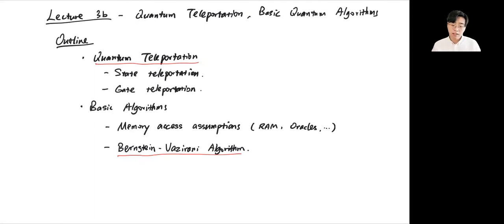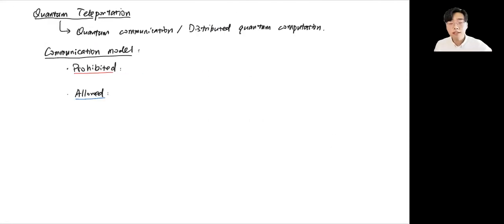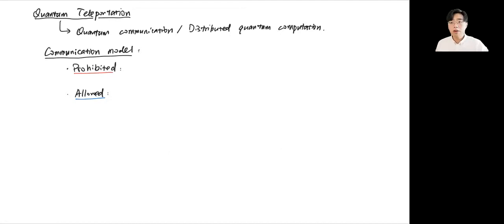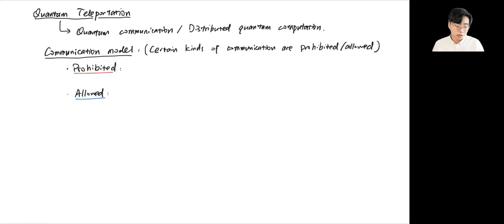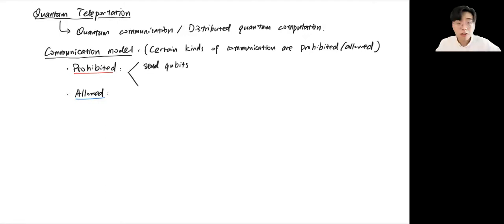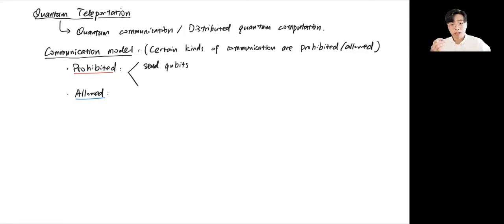Let's start with quantum teleportation. This is a technique arising from quantum communication and distributed quantum computation. Before we talk about quantum teleportation, let's clarify the assumptions about the communication model. Suppose you want to perform computation on a system of multiple parties. The assumption here is that only certain kinds of communication across the parties are allowed or prohibited. The first assumption is that it is prohibited to send qubits between the parties — in other words, no direct communication of quantum information.